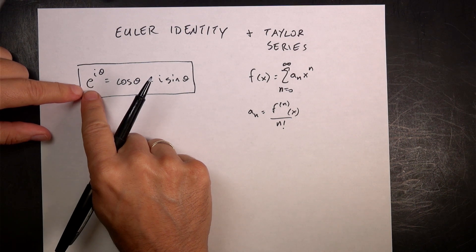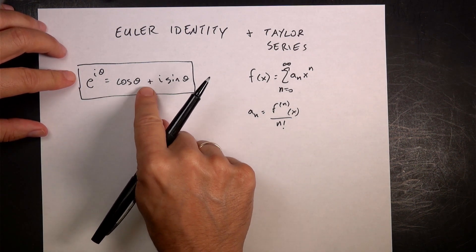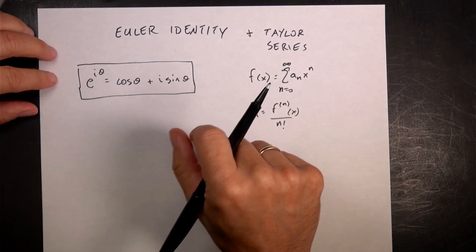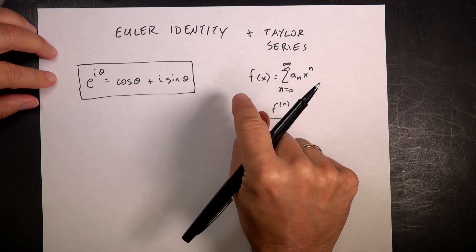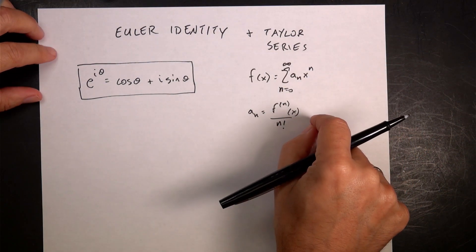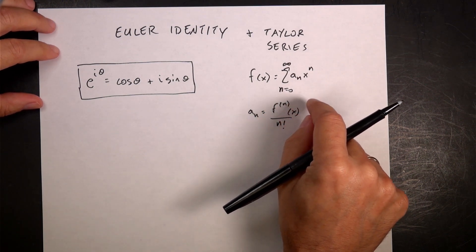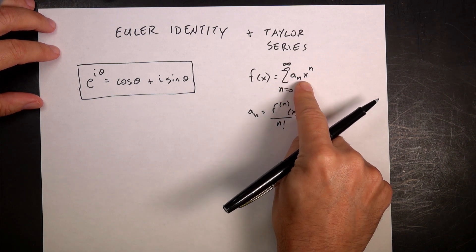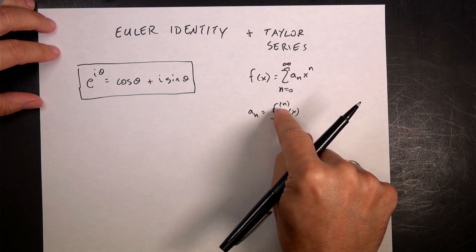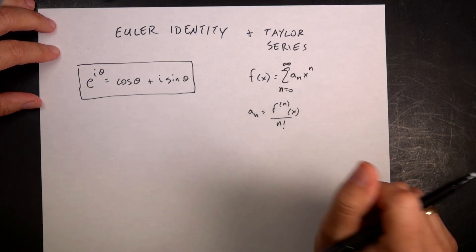If you take e to the i·theta, that's the same as cosine theta plus i times sine theta — that's kind of weird. The Taylor series says that you can represent a function expanded about some point (I'm using the point zero) as an infinite polynomial: some coefficient times x to some power, where the coefficients are the derivatives of that function divided by n factorial.